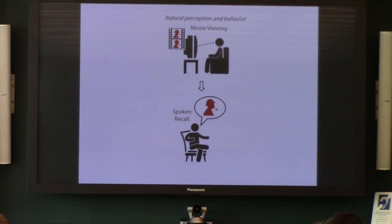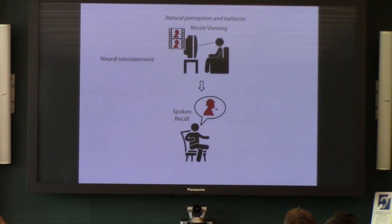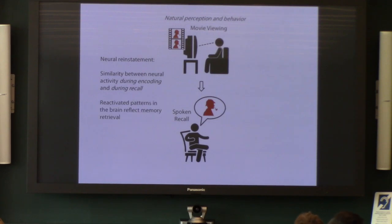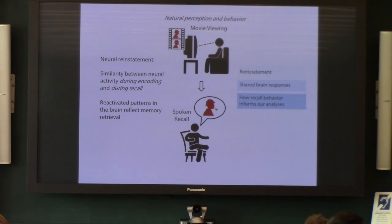Throughout the presentation today, I'm going to be returning again and again to this idea of reinstatement — the notion that when you remember a prior experience, you are reactivating patterns of activity that were present during the original encoding of that experience. We look throughout the brain to find evidence of similarity between activity during encoding — the movie viewing — and activity during recall when you're talking about those events from the movie. I'll talk about reinstatement, show how these patterns can be similar across people during shared perception and shared memory, and point out how recall behavior informs our analyses.